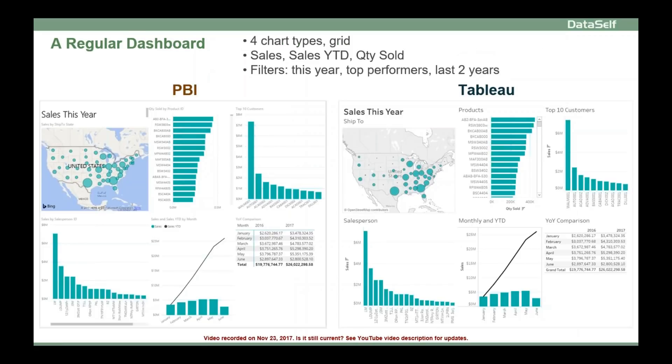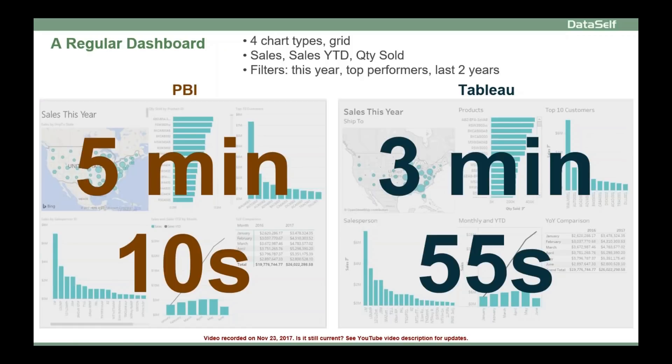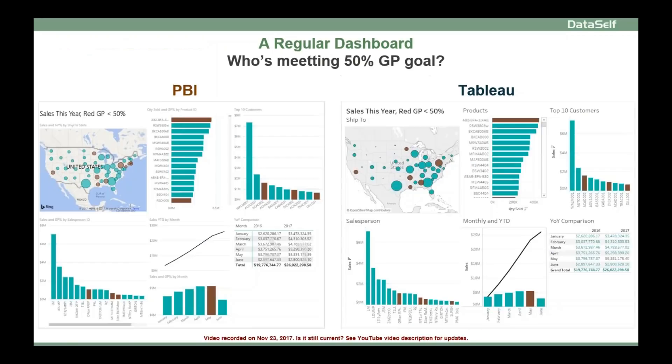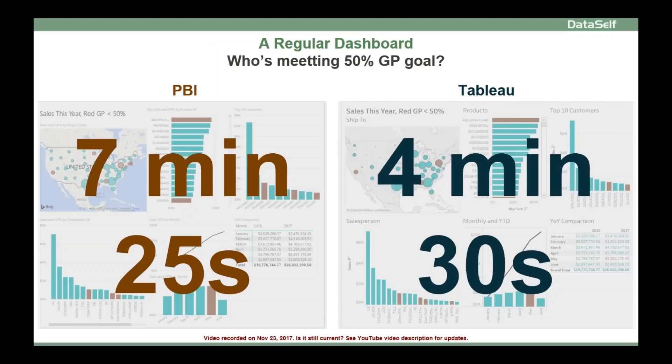Let's take a look at some more elaborate comparisons. This is what you would consider a regular dashboard. It has four different chart types. It has grid, a few measures, a few filters, and both look great on both products. So how long does it take to build from scratch? Just mechanically, the process. Right there, you have the timing to build from scratch. What if you add who's meeting the 50% gross profit goal on both dashboards? How long does it take to build them? Right here, you have the benchmark.